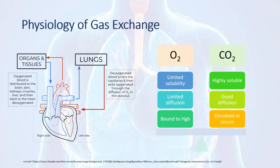Oxygen also has limited diffusion capacity because of its low solubility. Therefore, to diffuse across a membrane effectively, the membrane has to be thin and there has to be a good gradient. Oxygen will diffuse from an area of high concentration to an area of low concentration. When capillary blood passes across the alveolar membrane, that membrane must be thin enough to allow oxygen to move from the alveoli to the capillary, and the gradient must be high enough to encourage that movement.